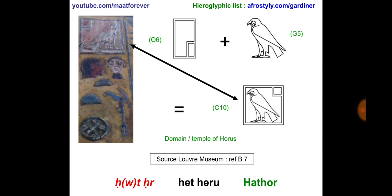Was plus the sound T gives us Waset. Right at the bottom you have the ideogram which denotes a place. Waset is the name of a place which was at one point a capital in Kemet — nowadays known as Thebes, though it is not called Thebes today.